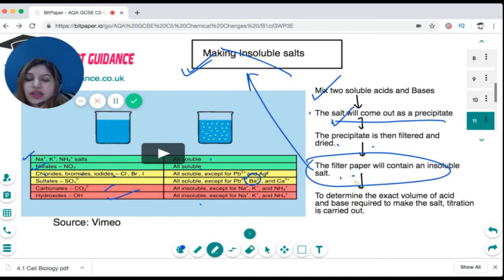Now how will you determine what is the exact quantity of acid and base you use? You do titrations. And how you do titrations, you need to check the C4 video which is on quantitative chemistry. There I have explained the whole process of titration.